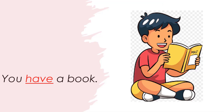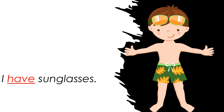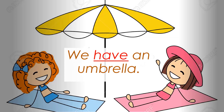Now look here — 'You have a book.' So along with plural nouns, if there is the pronoun 'you,' we also use 'have.' 'I have sunglasses' — when there is the pronoun 'I,' we also use 'have.' And look at this picture — 'We have an umbrella' — when there is the pronoun 'we,' we also use 'have.' So remember: plural nouns and the pronouns 'you,' 'I,' and 'we' all take 'have.'